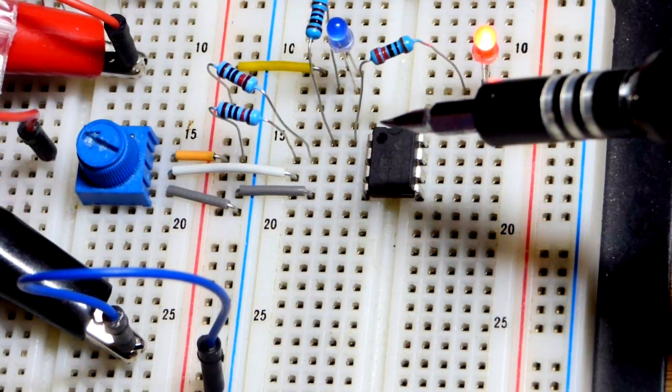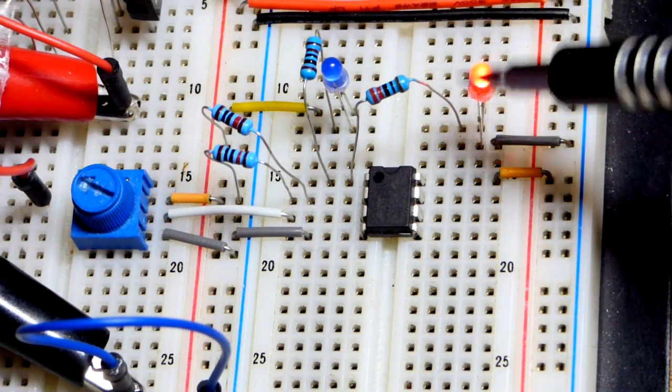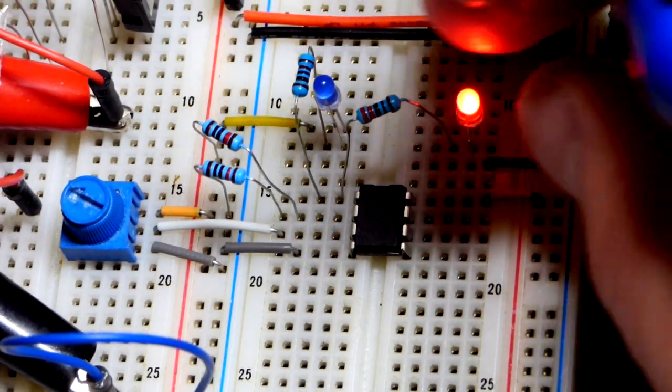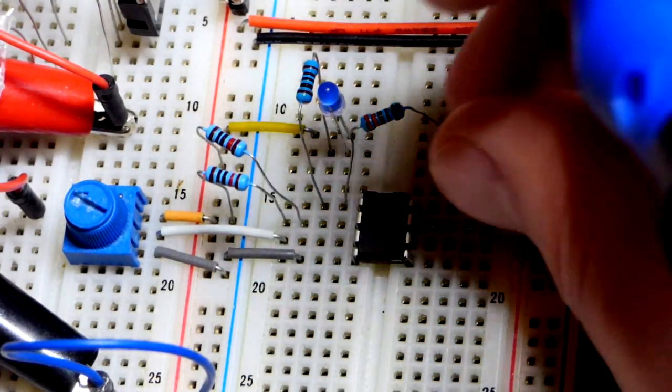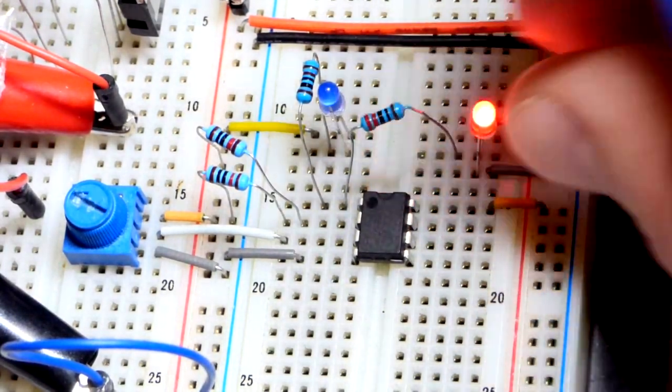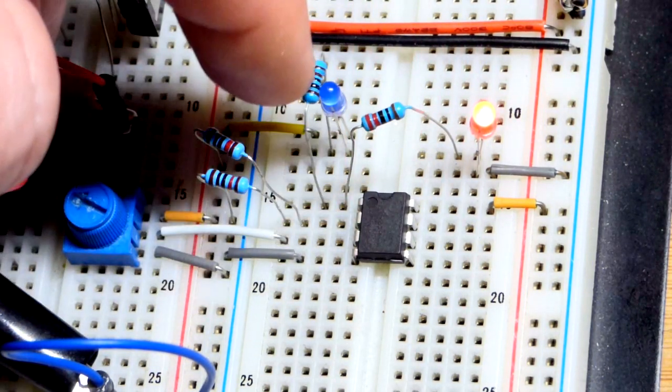At the output we have a resistor, 220 ohm, going to the red LED, going up to the top, the long lead, the anode. Right now the output's high. So long lead is the anode, short lead is the cathode down to ground.